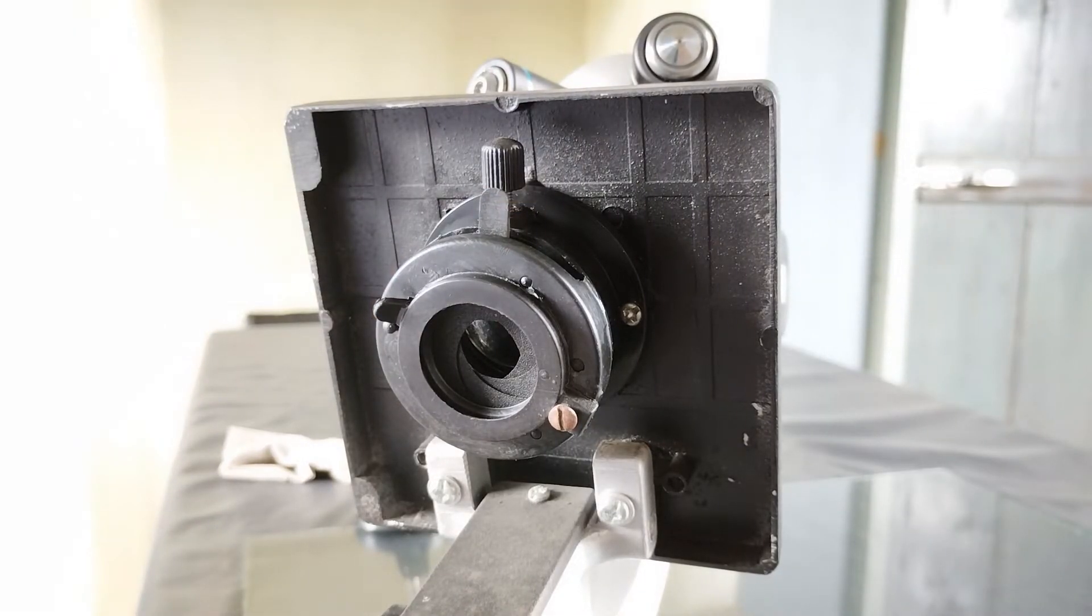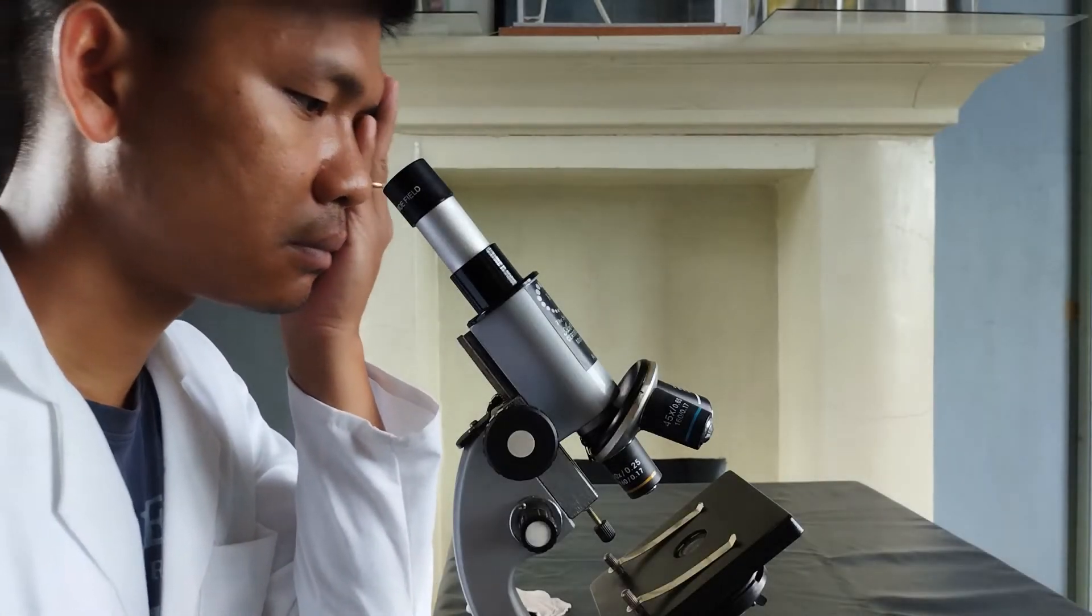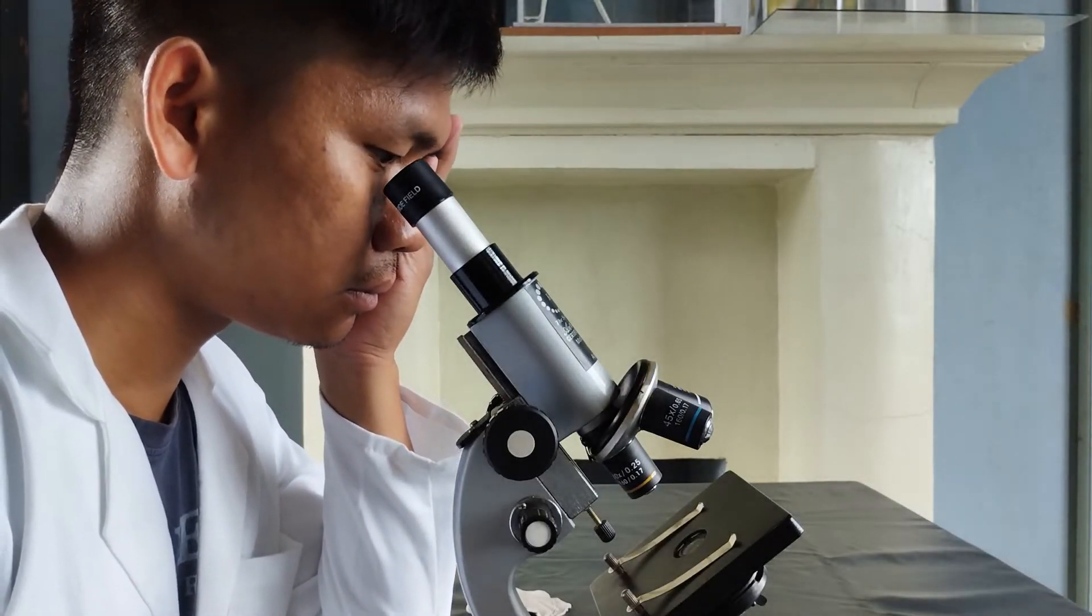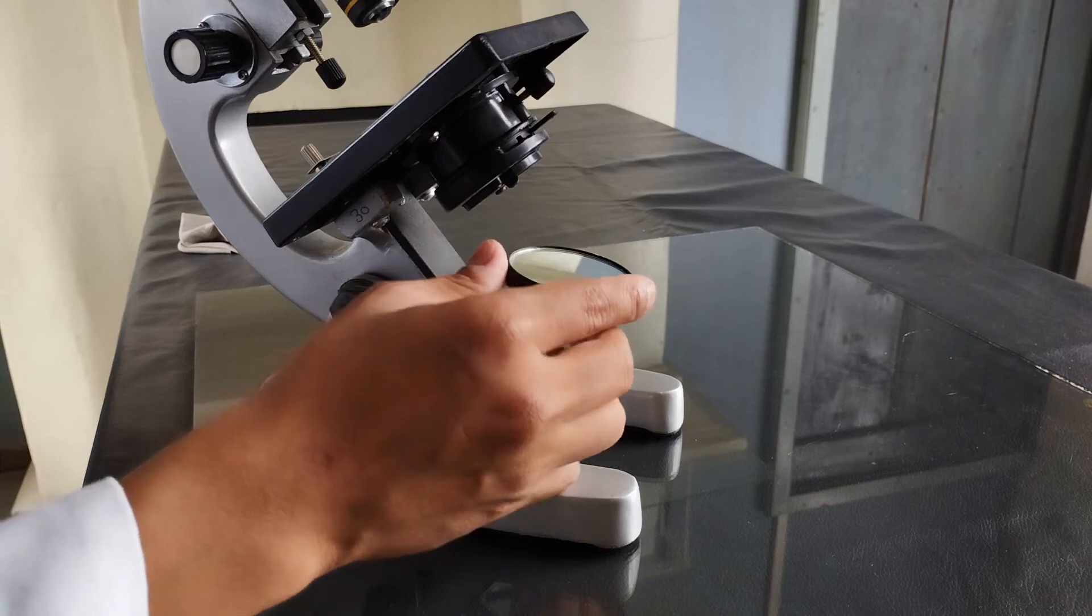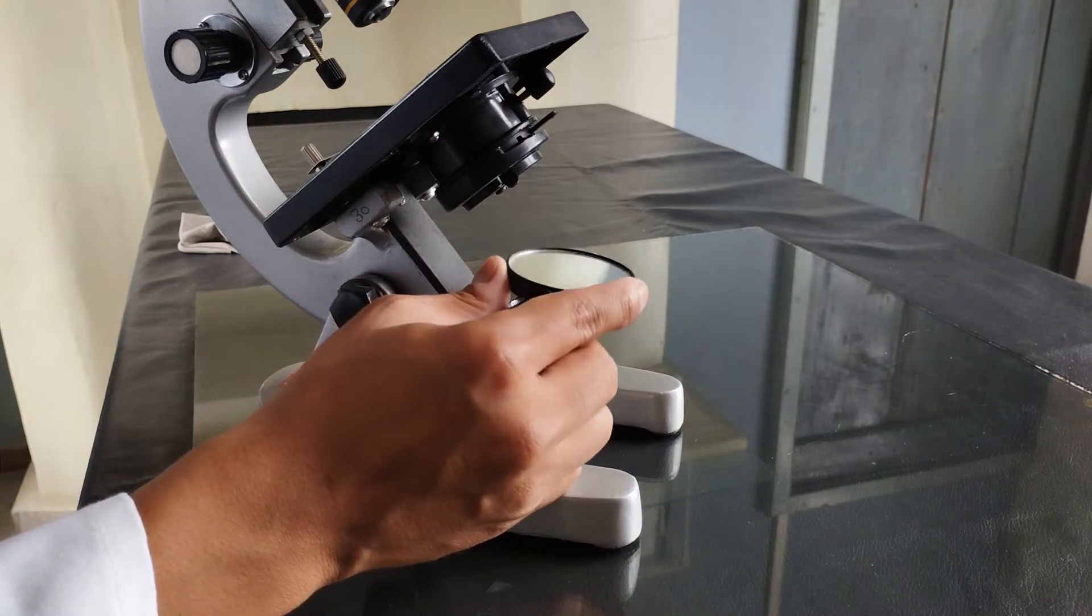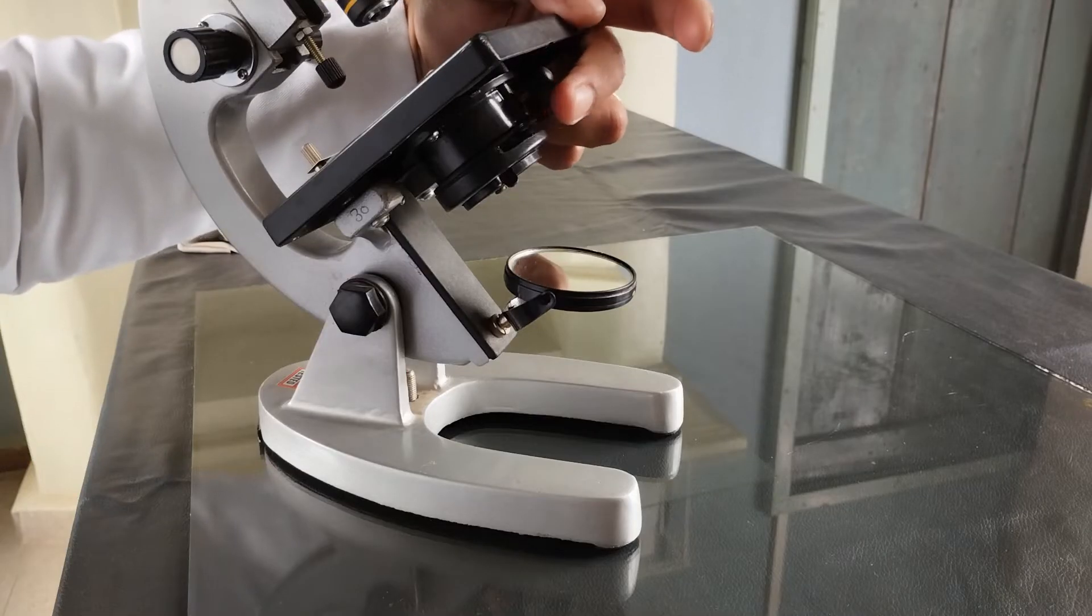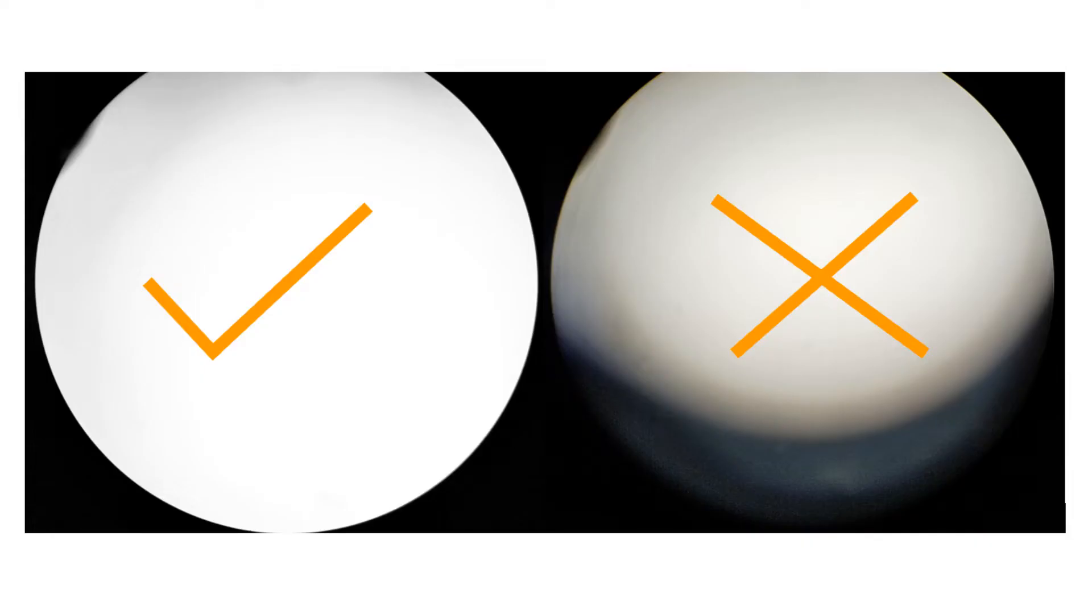Next, cover one eye with your hand, and with the other eye, look into the eyepiece. Then, adjust the mirror sideways and up and down, and also adjust the aperture of the iris diaphragm until the circular field of view is uniformly illuminated throughout, but not excessively bright.